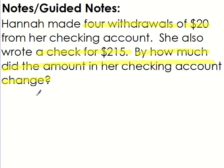So the first part is that there are four withdrawals. Remember withdrawals is money being taken out. You're taking it out of your account. So we have four times negative 20 because we're withdrawing it. Now writing a check means I'm also giving that money to someone else. So that is coming out of my account. Writing a check. So we would then subtract 215.